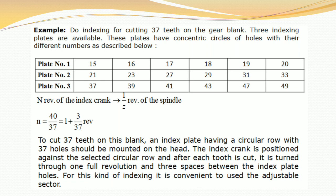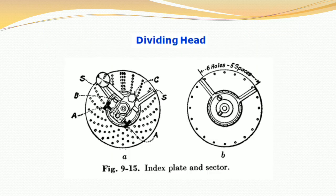The index crank is positioned against the selected circular row of 37 holes. After each tooth is cut, it is turned through one full revolution and three spaces between the index plate holes. For this kind of indexing it is convenient to use the adjustable sector. The figure shows the dividing head with the index plate and sector — in figure B there are six holes and five spaces.